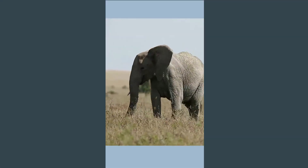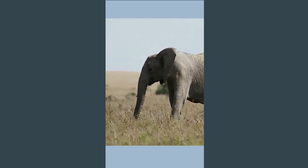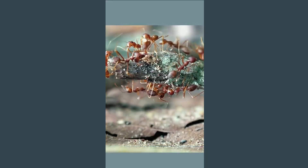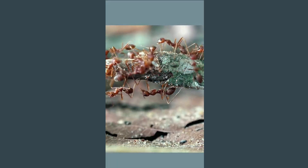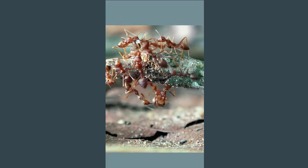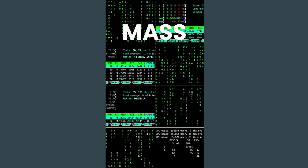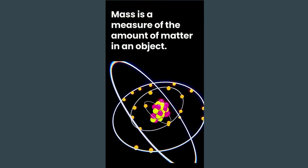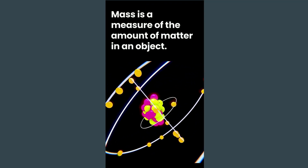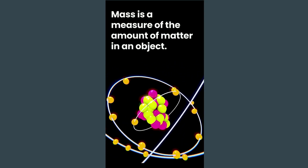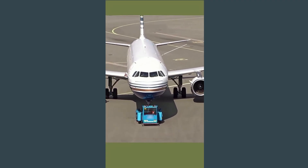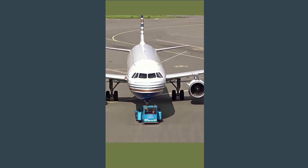This elephant has a mass of roughly 5,000 kilograms. These ants have a mass between 1 and 150 milligrams, which is a tiny fraction of the elephant. But what is mass? Mass is a measure of the amount of matter in an object. It determines how much matter or stuff an object contains and it also represents the object's resistance to change in motion, which is inertia.